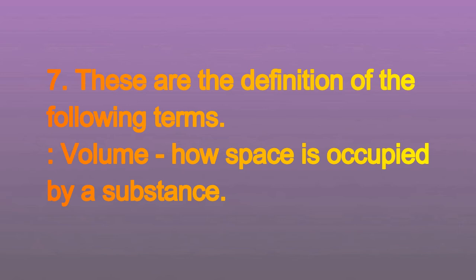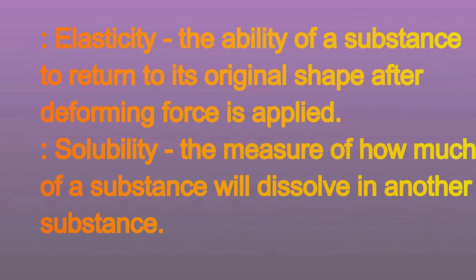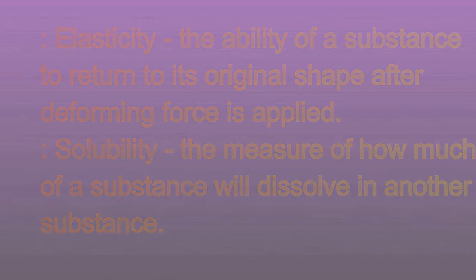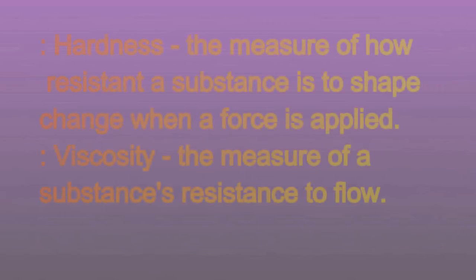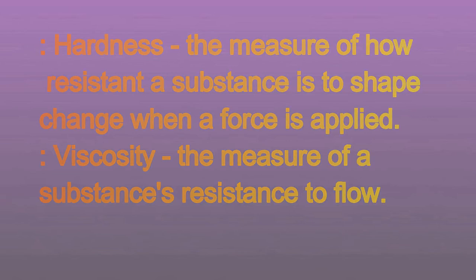Seven: These are the definitions of the following terms. Volume: how much space is occupied by a substance. Elasticity: the ability of a substance to return to its original shape after a deforming force is applied. Solubility: the measure of how much of a substance can dissolve. Hardness: the measure of how resistant a substance is to shape change when a force is applied. Viscosity: the measure of a substance's resistance to flow.